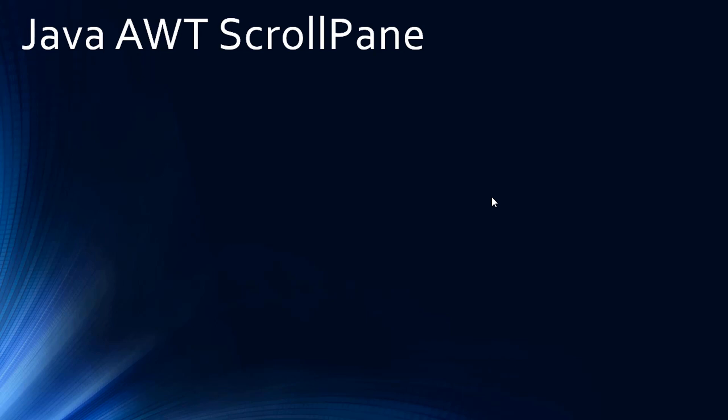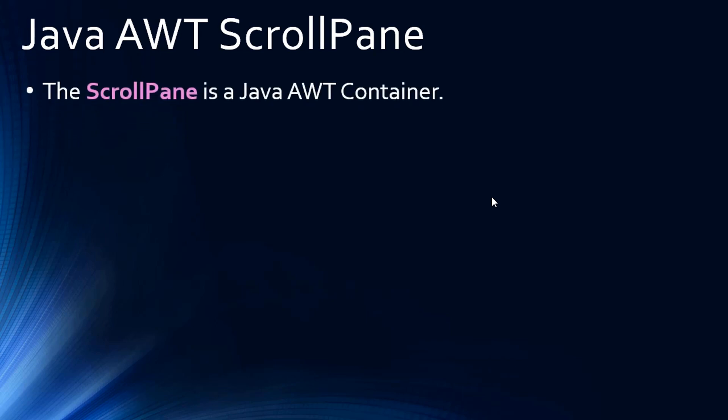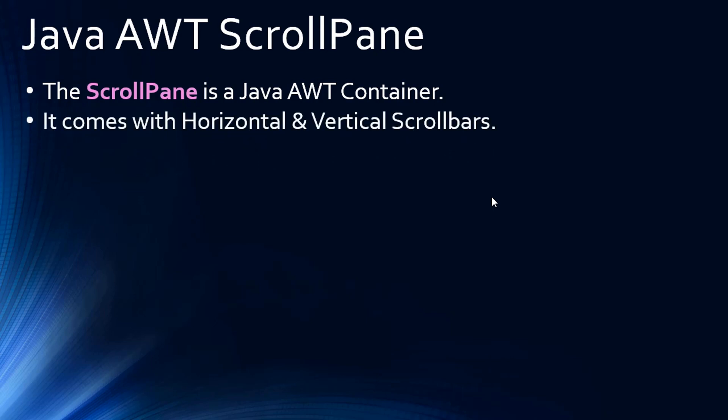First, let us know about the ScrollPane. The ScrollPane is a Java AWT container, meaning it can contain a component and scroll that component. The ScrollPane comes with horizontal and vertical scroll bars, but you can customize it — whether you need only a horizontal scroll bar, only a vertical scroll bar, both, or even no scroll bar at all.